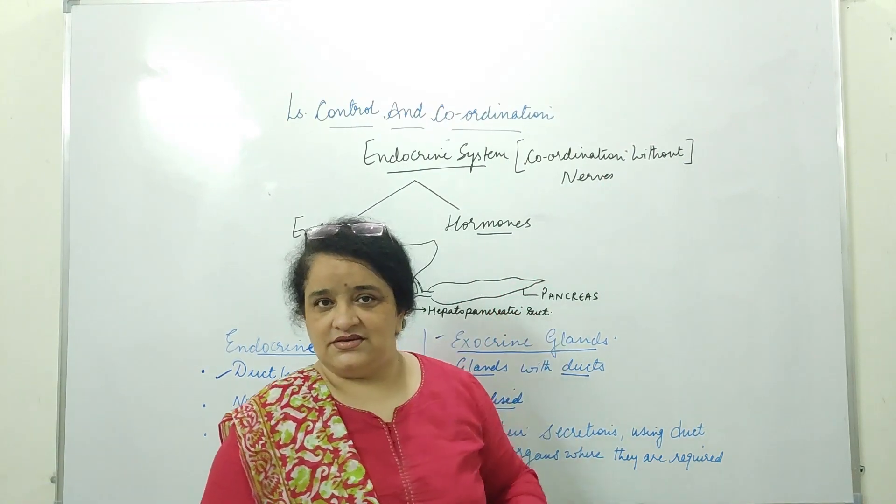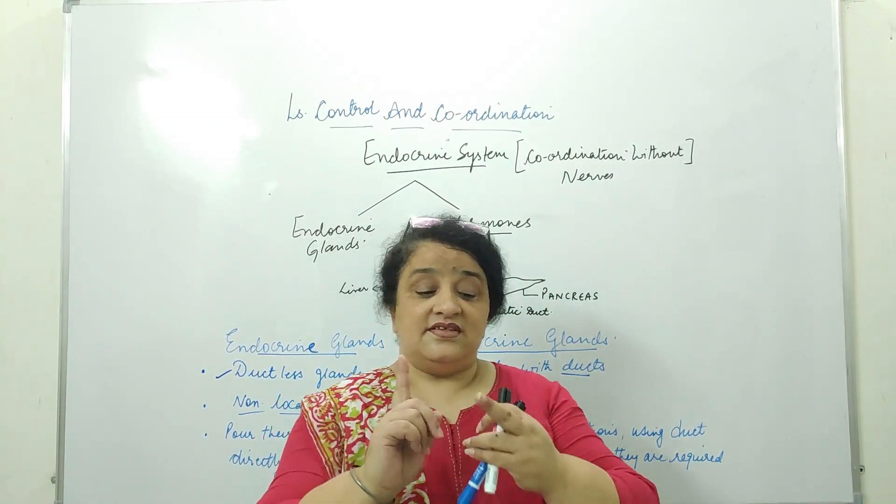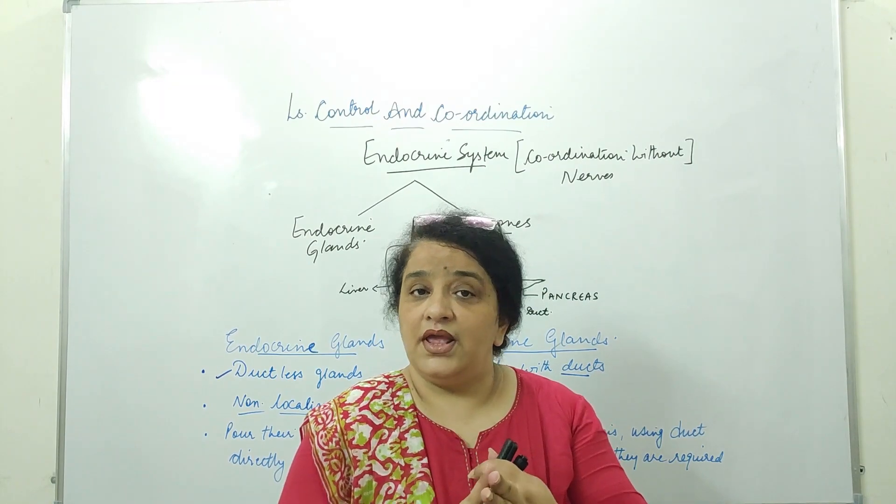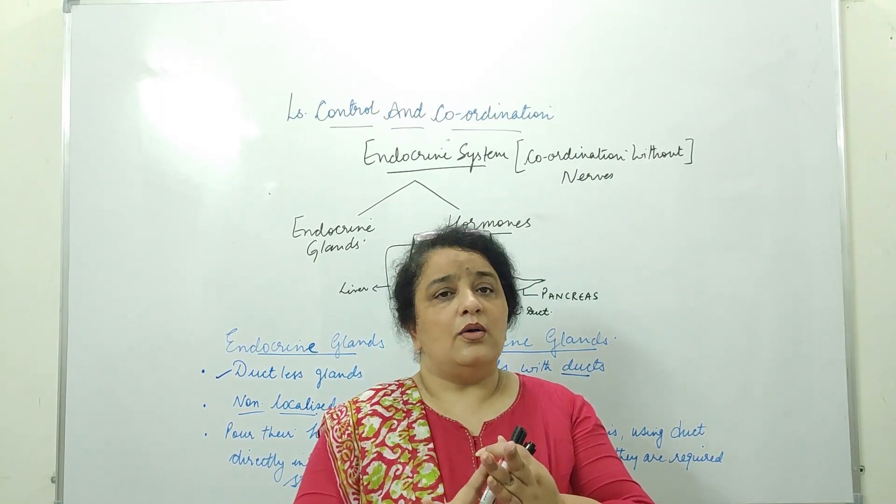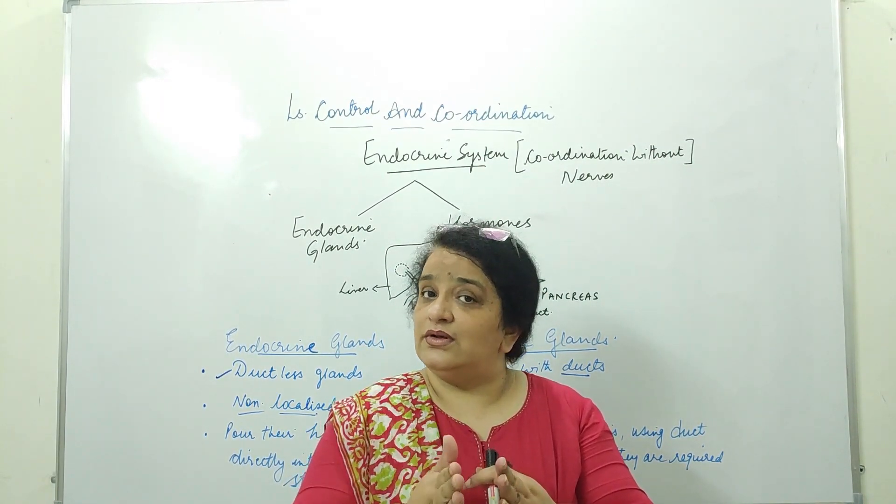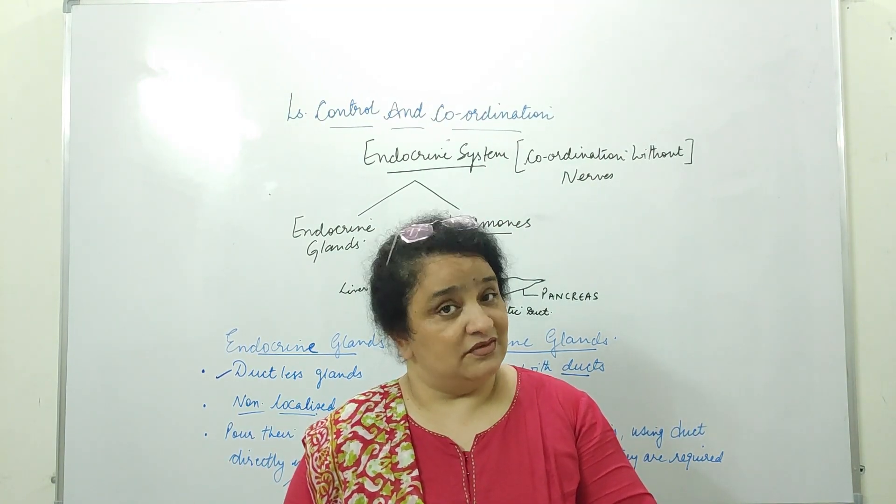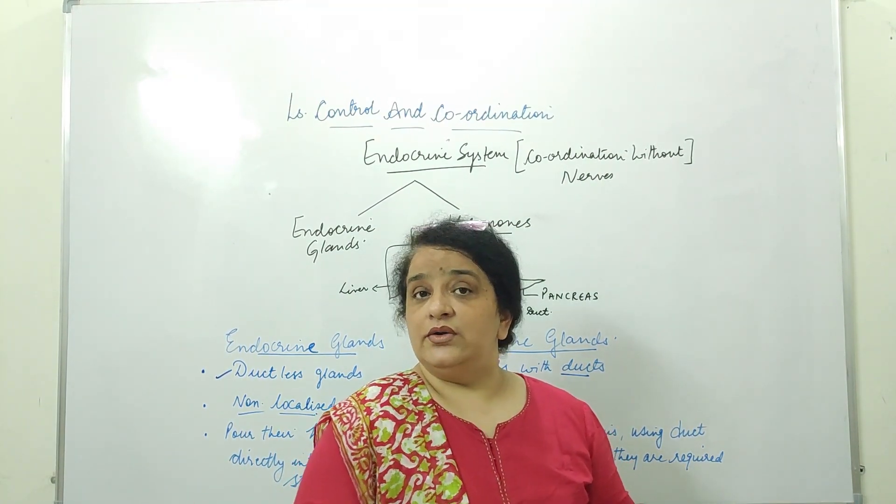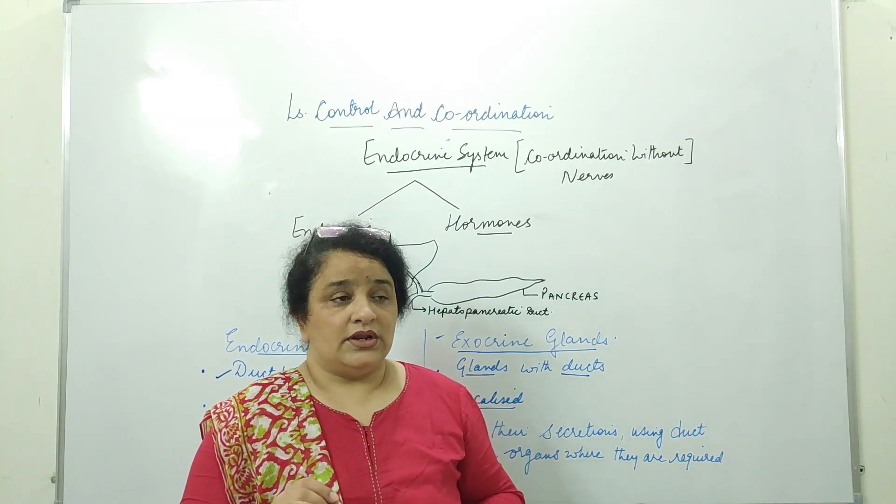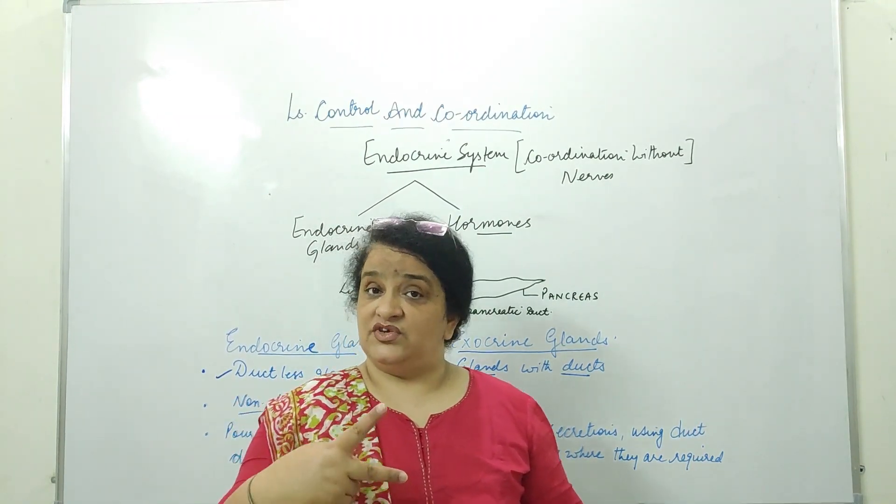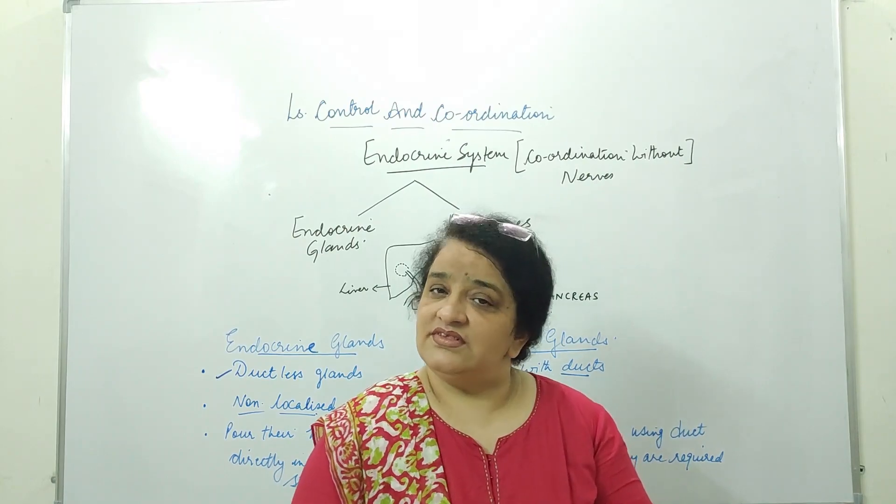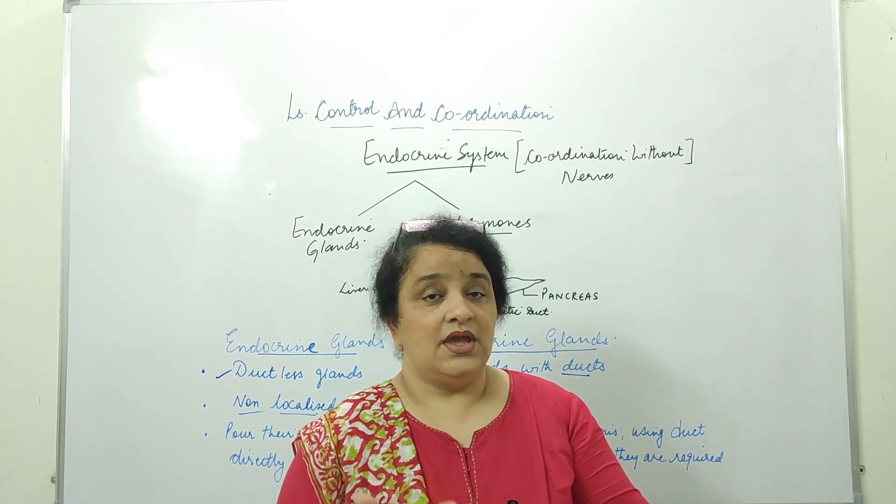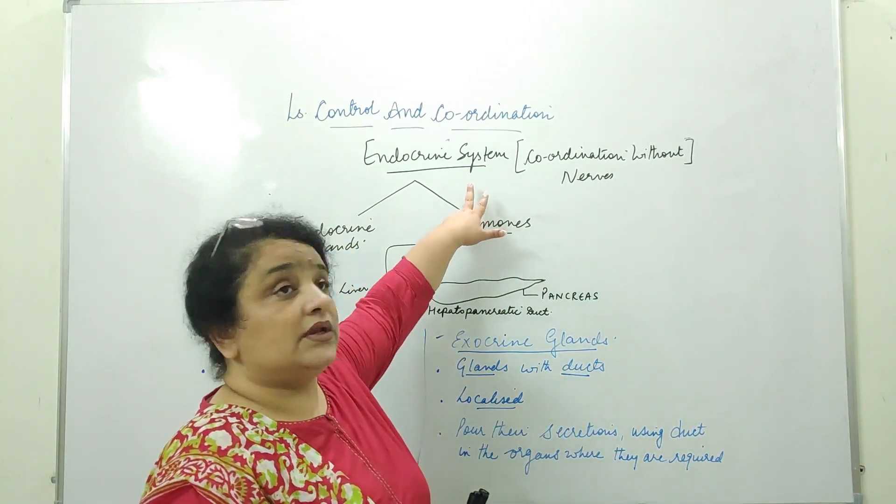In the last videos we did the nervous system, the central nervous system, brain, spinal cord and how the control and coordination of an organism with the environment with the help of nerves. As I told you earlier, in control and coordination two systems work together: one is the nervous system that is a controlling system and another is the endocrine system.